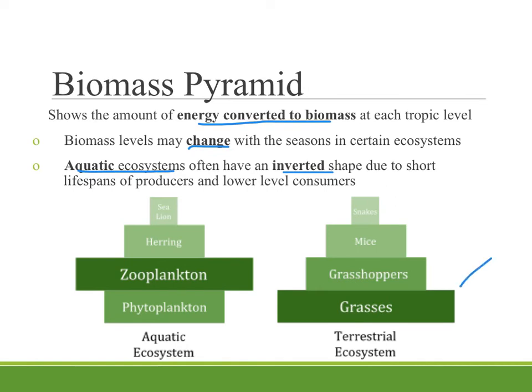Looking at two examples — in a typical terrestrial ecosystem based on grasses, such as a prairie, many individual grass plants are feeding a smaller number of grasshoppers, and they're able to produce a certain amount of biomass. That biomass is then transferred onto mice and finally to snakes. As we move up the biomass pyramid, it looks very similar to our energy pyramid — there's less energy being converted to biomass because of the lifespan of all of these organisms.